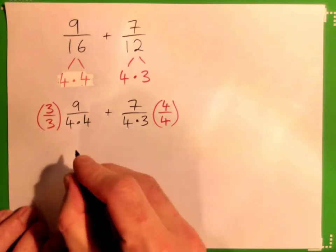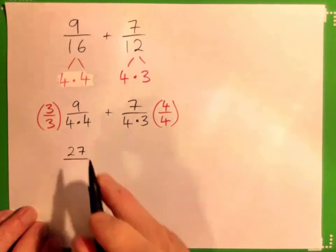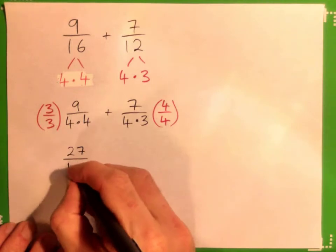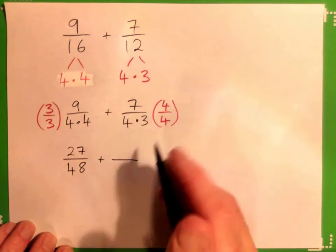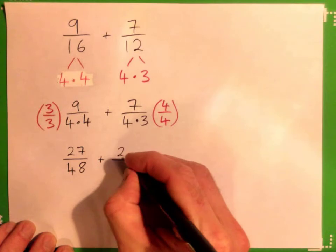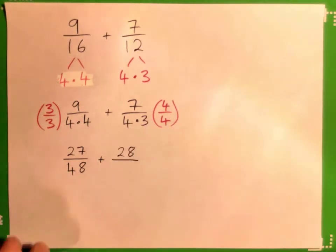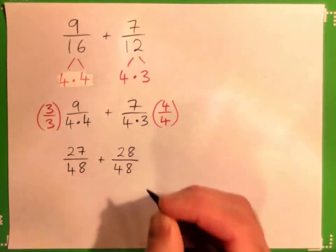So 3 times 9 is what? 27. And what's 3 times 4 times 4? Take your time. 48. Good. And now the top here, we got 7 times 4. 28. And the bottom, 4 times 3 times 4? 48.